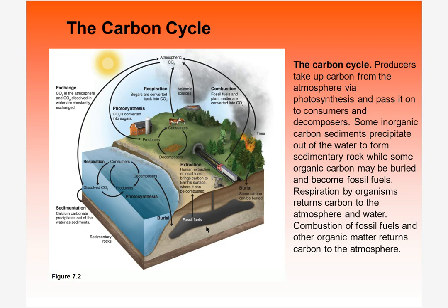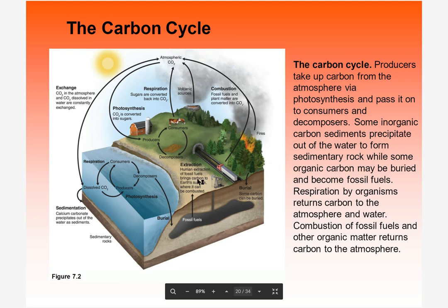Humans can extract that buried carbon and burn it extremely fast, whereas this cycle normally takes a very long time. So if we take fossil fuels out and burn them immediately, we're introducing very old carbon into the modern carbon cycle that is constantly being cycled. That's why it's a big problem. Combustion puts CO₂ back into the atmosphere, and so do volcanoes.